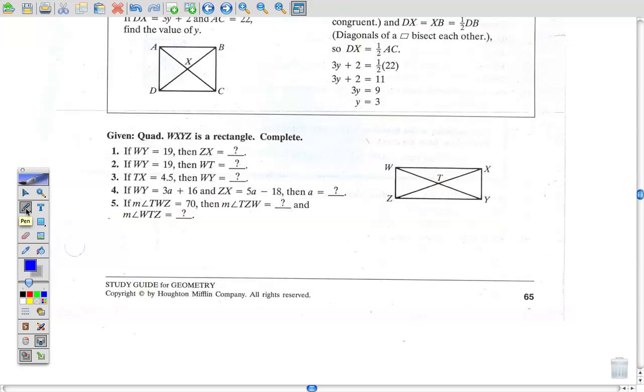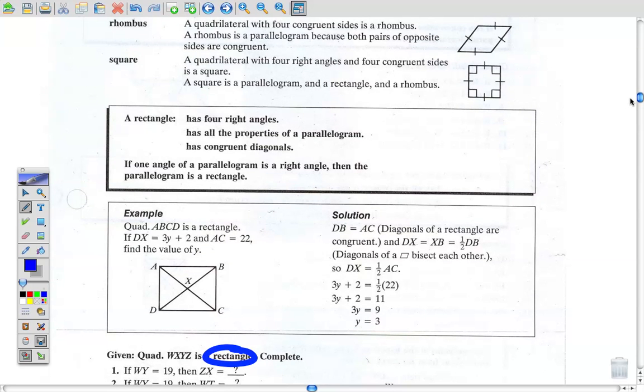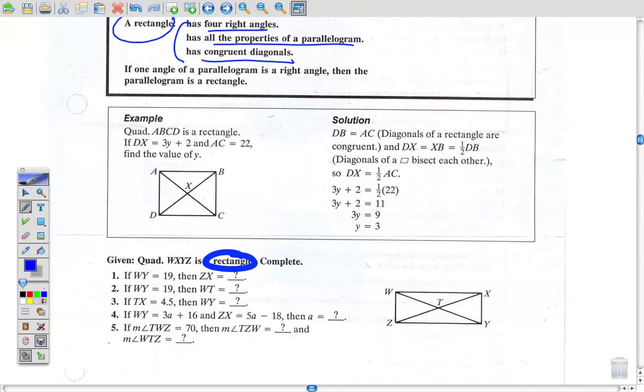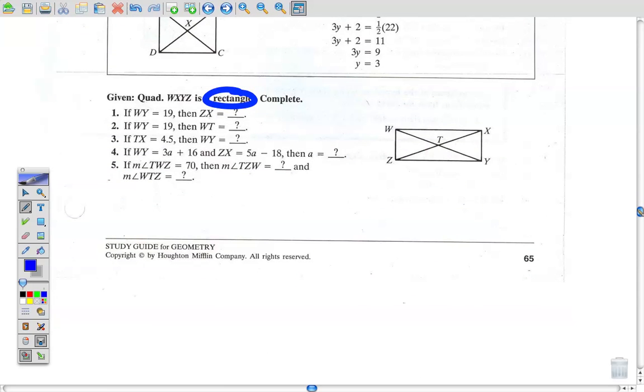Now first of all, what do we have here? We have a rectangle. So the first thing I would do is go up to the characteristics, find your sheet here, and look at the characteristics of a rectangle. A rectangle has four right angles. It has all those properties of a parallelogram - the opposite angles are equal, opposite sides are equal, and so on. And the diagonals are congruent to one another. So really, this first one and the last one are the two main ones. Diagonals are congruent to one another, you have four right angles. So number one, if WY is 19, what's ZX? Well, since we know it's a rectangle, the diagonals are equal to one another, so it's got to be 19.